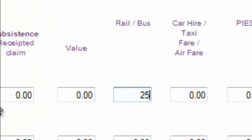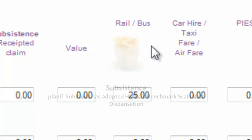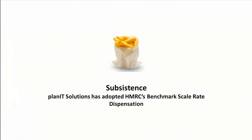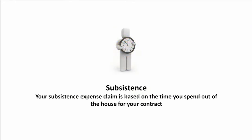The food and drink you consume during your day's work is called subsistence. PlanIT operates the HMRC benchmark scale rate dispensation for subsistence claims. This means you can automatically claim a set amount of expenses on food and drink without receipts.